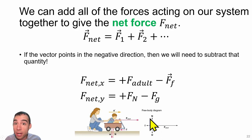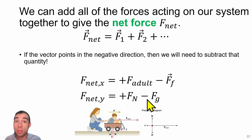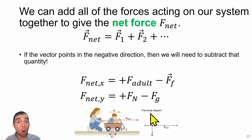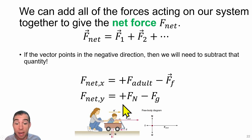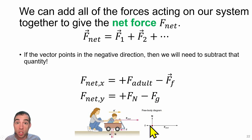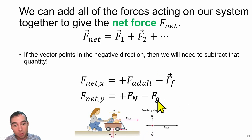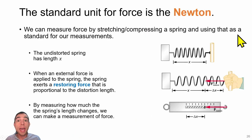In the Y direction we have a gravitational force pulling down — that's why it has a negative — and a normal force pushing up — that's why it has a positive. In the X direction, friction acts to the left, so it's negative. The standard unit we use for force is called a Newton.